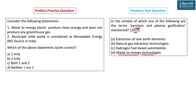Statement 1: Waste to energy plants produce clean energy and do not produce any greenhouse gas. As you can understand from the tone, it sounds like an absolute extreme statement. Waste to energy plants are cleaner than incineration because they ensure complete combustion and convert every carbon-based product into carbon dioxide. But carbon dioxide is a potent greenhouse gas, so the statement is obviously incorrect.